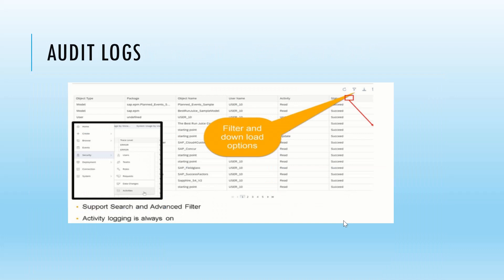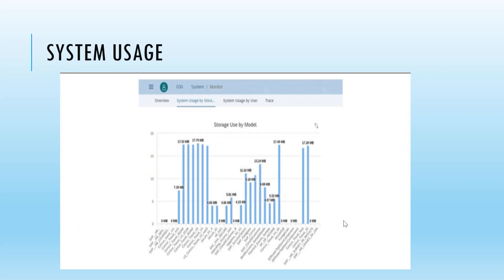There are audit logs which are useful for tracing logs of particular files. Whenever you want to see logs of a particular deployment, those logs are stored in the log files. Lastly, there is system usage monitoring, which shows which models are taking more time or consuming more memory. You can see the memory usage for each model — for example, some models may use 17 MB while others are very small. This is useful from a performance perspective, helping you identify which models to optimize.